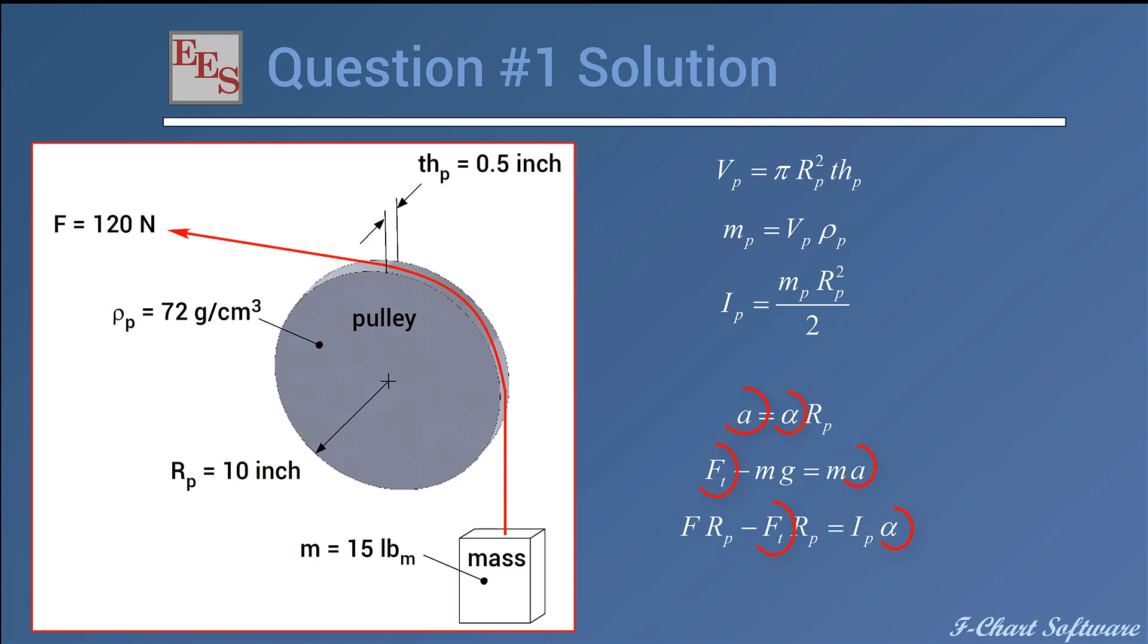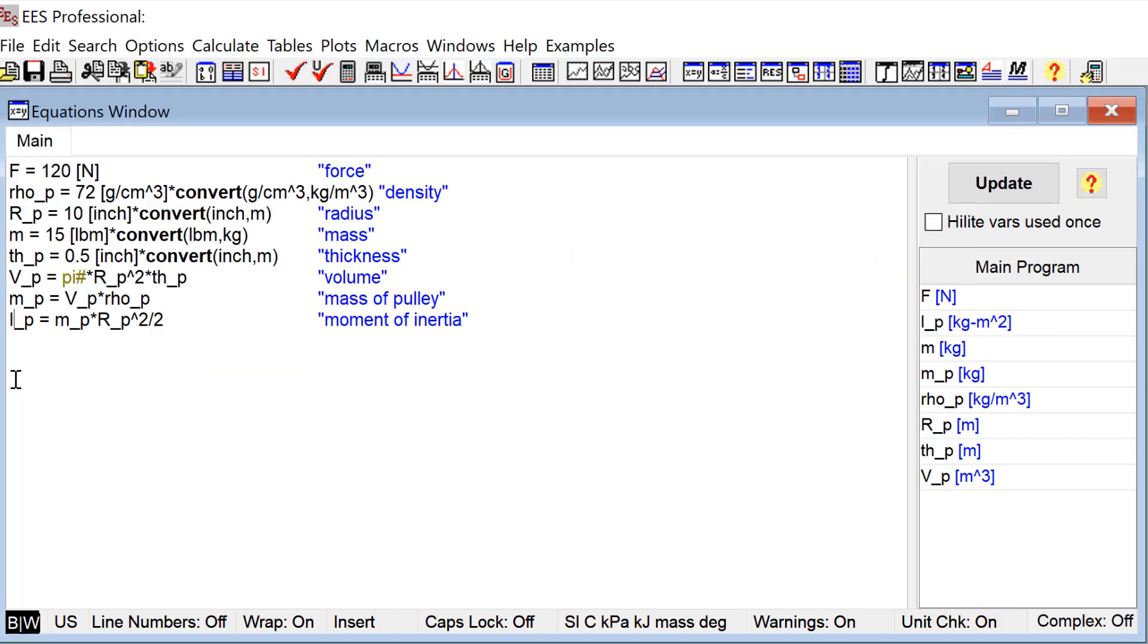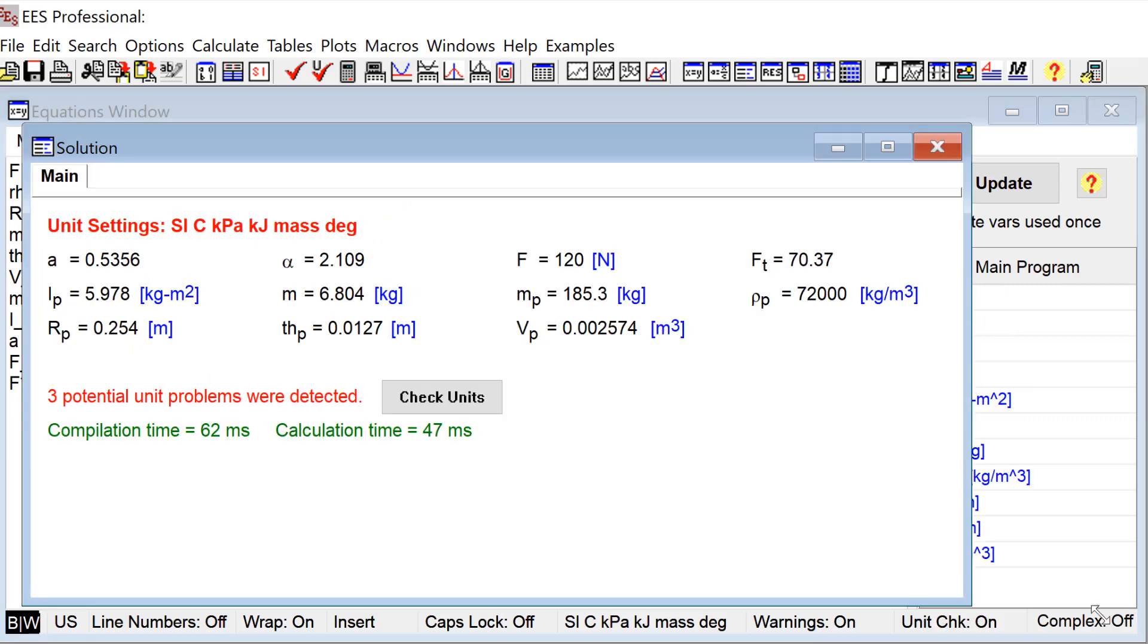So this is now three equations and three unknowns. The unknowns are acceleration, angular acceleration, and tension. I can enter these three equations into EES, so I'm going to go ahead and do that. It'll take a little while. Once that's complete, then I can try to solve those and see if I get a solution.